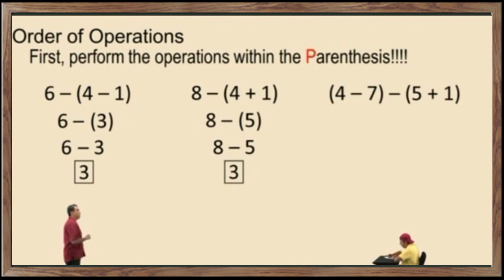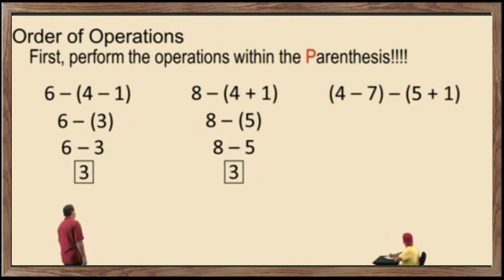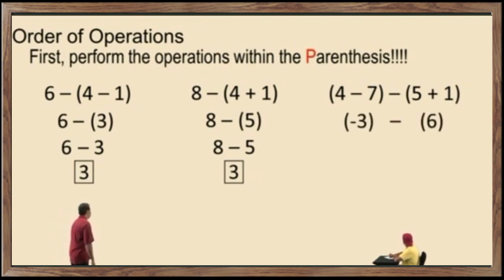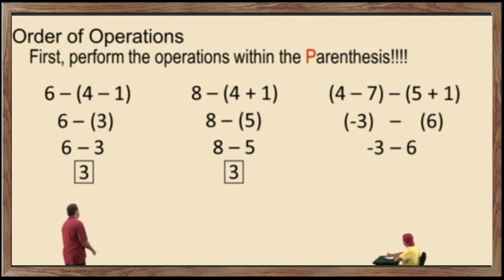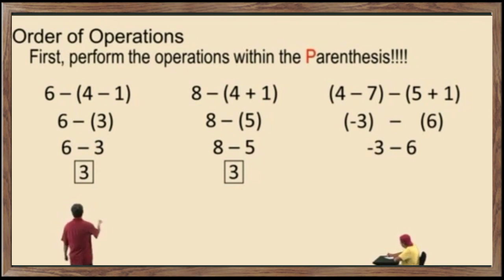Now, notice we have two sets of parentheses, so we have to simplify the expressions within both parentheses. 4 subtract 7 is negative 3. 5 plus 1 is 6. We don't require those parentheses around the negative 3, and because we're subtracting a positive 6, we do not require parentheses around that 6. So it turns into negative 3 subtract 6, which is negative 9.